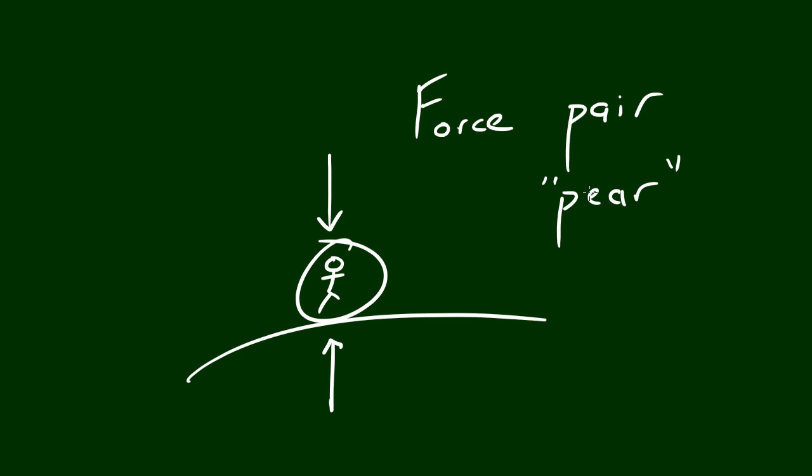A force pair happens when two objects have equal force but opposite directions. So let's give this a fake force of 10 newtons gravity, and the earth is pushing up with 10 newtons upward.